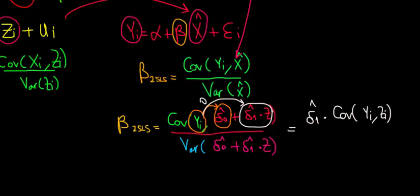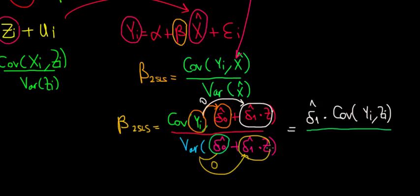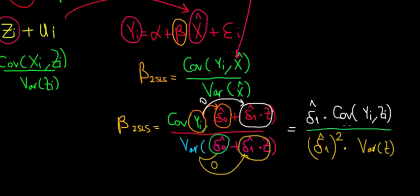Applying the same logic to the denominator: the variance of δ̂₀ is 0 since it's a constant. Then the variance of δ̂₁·z can be written as δ̂₁ squared times the variance of z — the reason it's δ̂₁ to the power of 2 follows from standard variance rules, which you can find in the playlist. We leave it here for this video and continue solving the math in the next video.